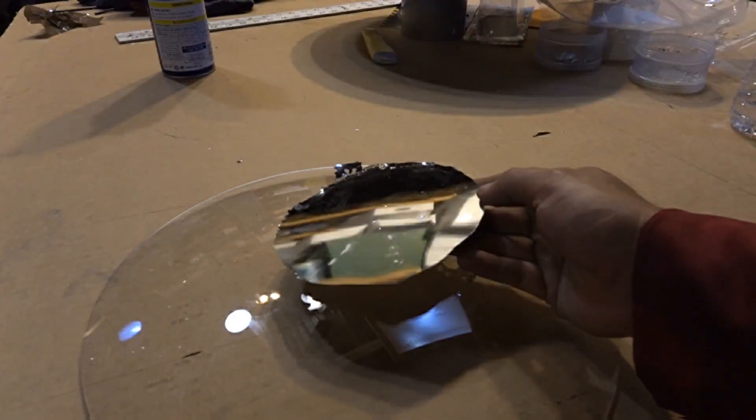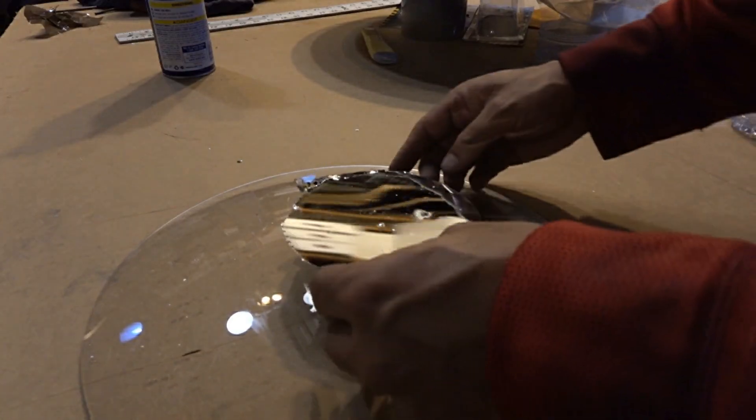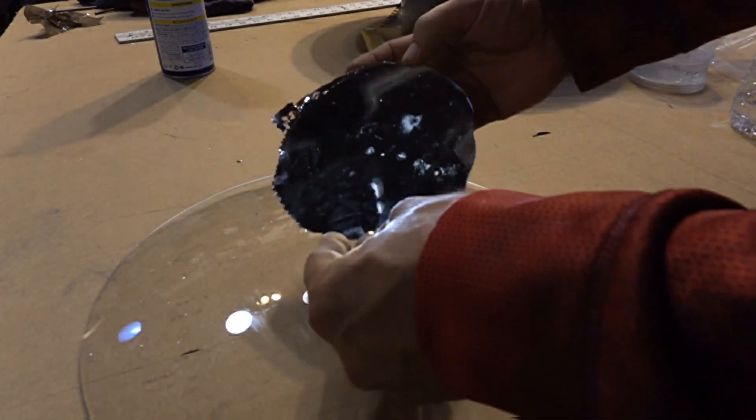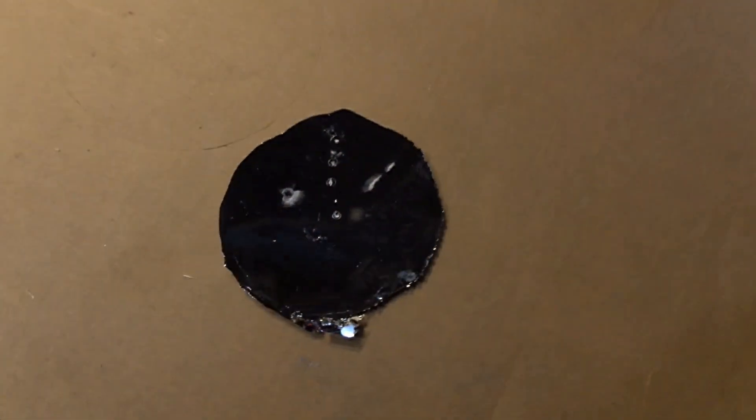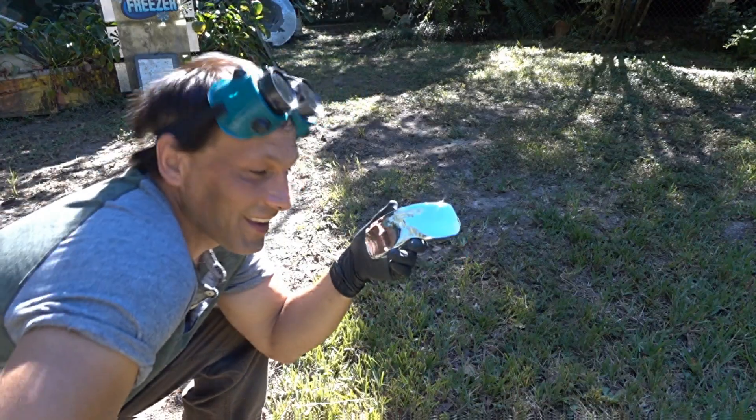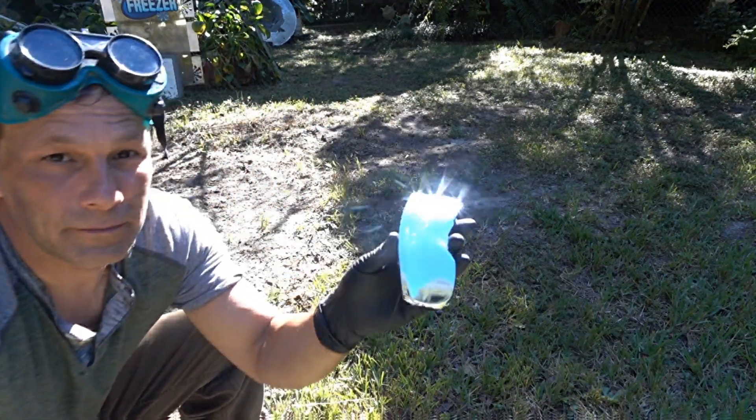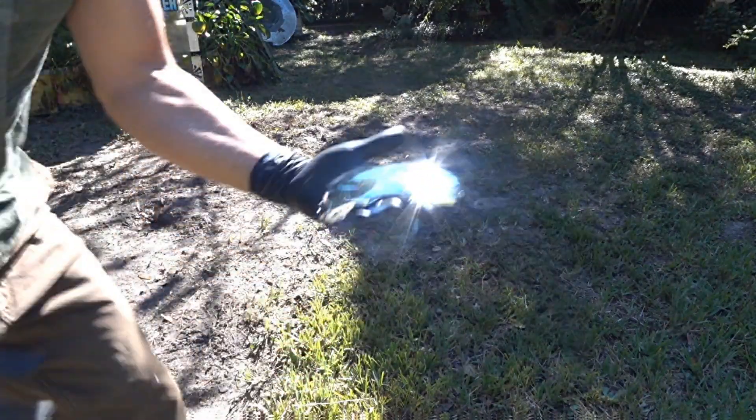While using gallium is very impractical for solar projects, it can be useful for large telescope mirrors where the gallium can be worked with in an ultra clean temperature controlled environment. So if you need a great temporary mirrored surface, gallium is a great option.